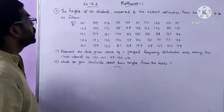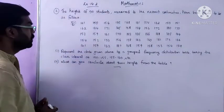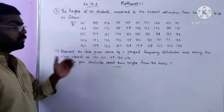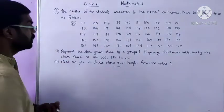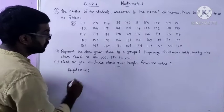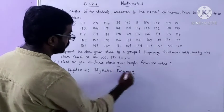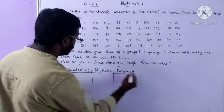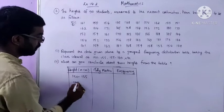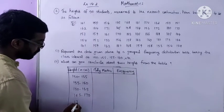Now we move on to question number 4. The heights of 50 students measured to the nearest centimeters have been found. We have to represent the data by a grouped frequency distribution table taking the class interval as 150–155, 155–160, and so on. We write Height in centimeters in the first column, then Tally Marks, and Frequency. The intervals are: 150–155, 155–160, 160–165, 165–170, and 170–175.